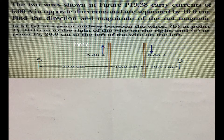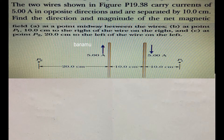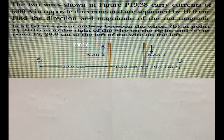The two wires shown in the figure carry currents of 5A in opposite directions and are separated by 10 cm. Find the direction and magnitude of the net magnetic field at point P midway between the wires (Part A), at point P1 10 cm to the right of the wire on the right (Part B), and at point P2 20 cm to the left of the wire on the left (Part C).